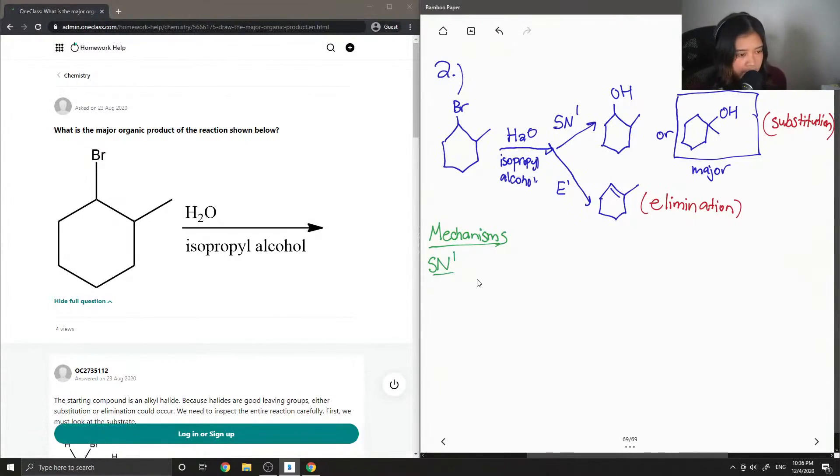For the SN1, we start off with our product, and then the alcohol group from isopropyl alcohol comes in, attacks right there and kicks off the bromine. And then this is how we get our first product.